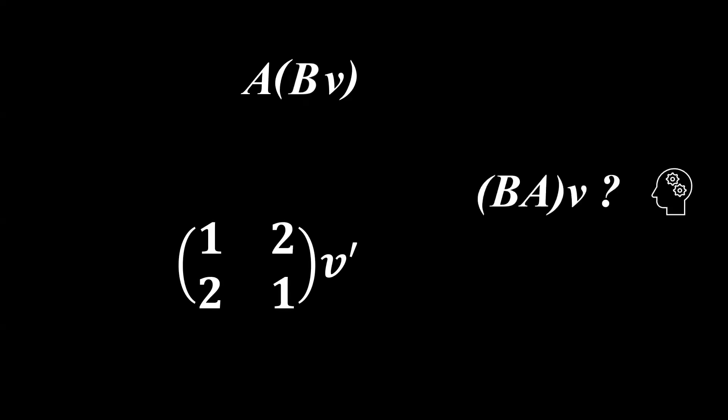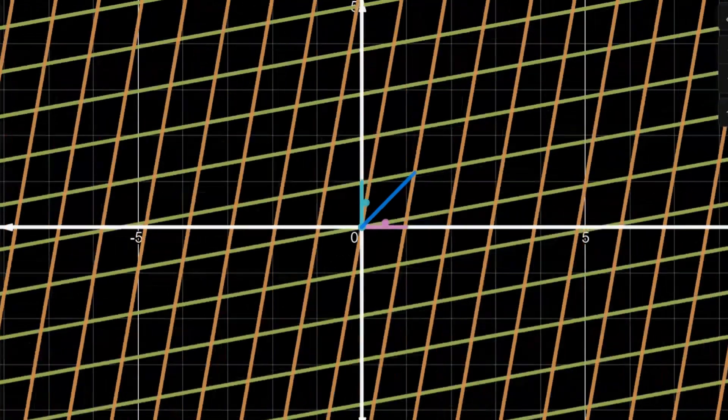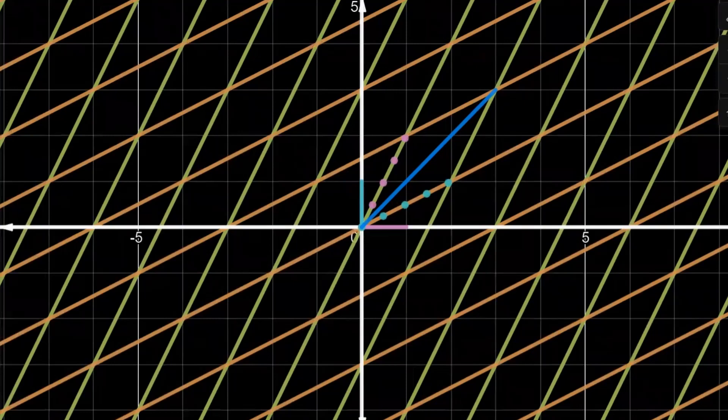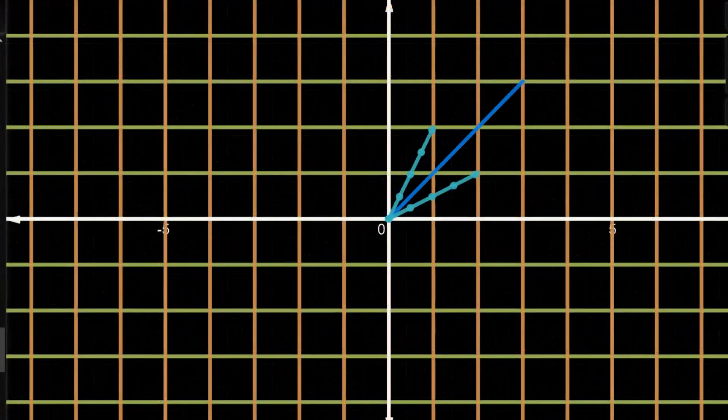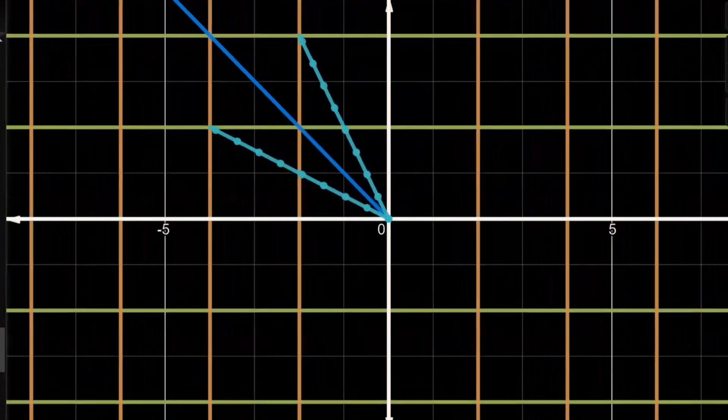This now raises a question. Does the order matter? We'll see that it does matter. That's because if we applied the matrix A first, we would have gotten this output. Now, applying the matrix B on that output would produce a totally different result from ours, isn't it?